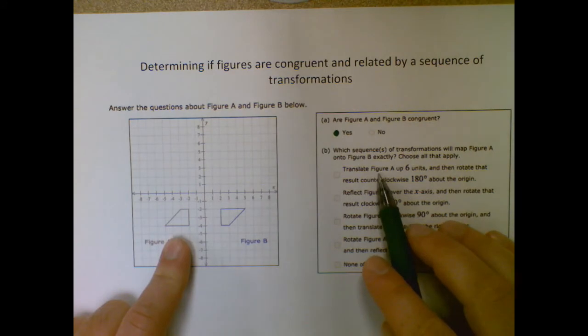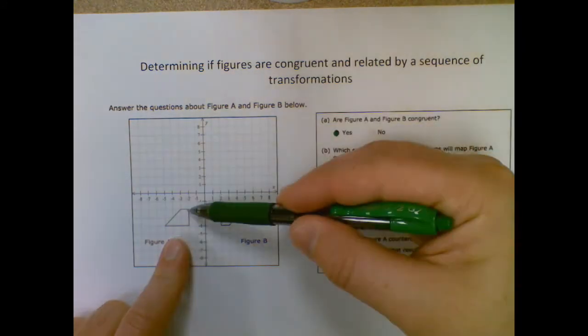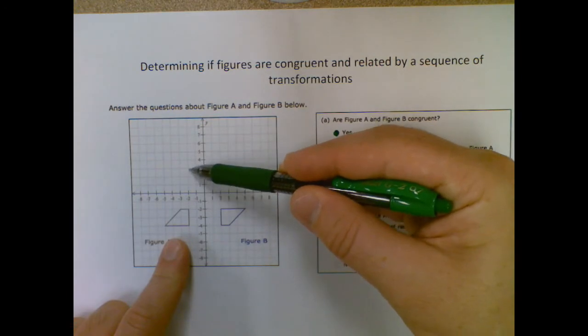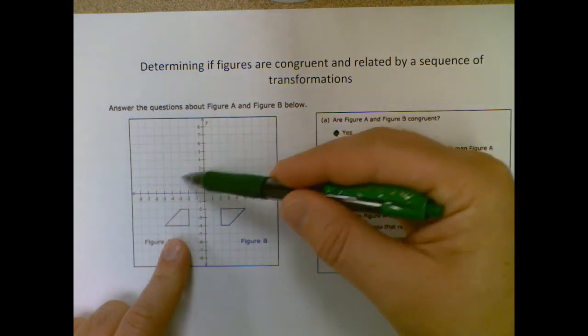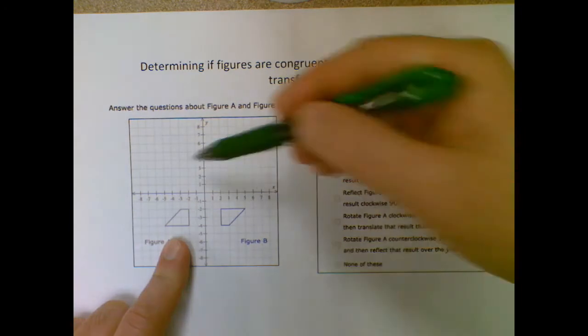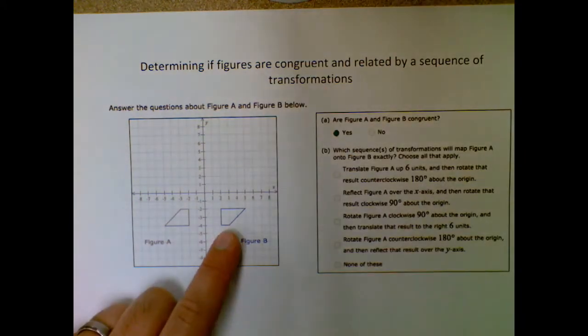So we're going to run through our options and see which one would land there. So move it up six units. One, two, three, four, five, six. So it would be up here. And then rotate 180 degrees around the origin. That seems promising.